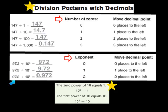In the last problem, we have 97 and 2 tenths being divided by the second power of 10. My exponent here is a 2, so I'm going to move my decimal two places to the left — once, twice — and my answer turns out to be 972 thousandths. These two examples reinforce our key concept: as you divide by increasing powers of 10, the decimal point moves one place to the left for each increasing power of 10.